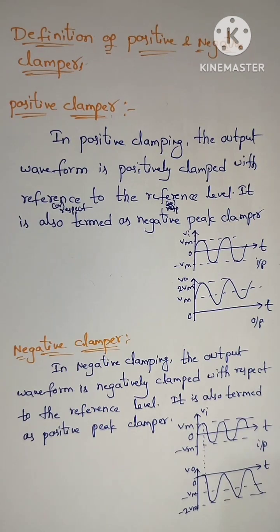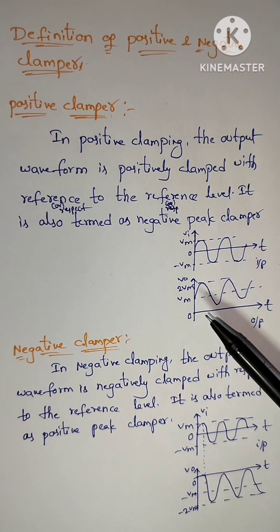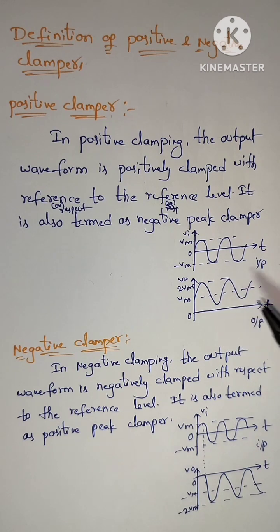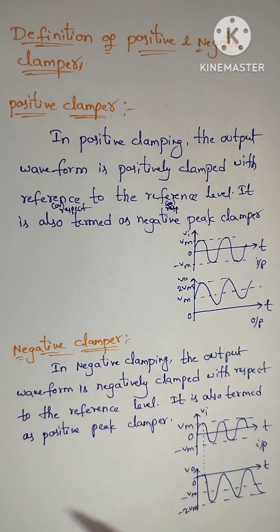In positive clamping, the output waveform is positively clamped with respect to the reference level. It is also termed as negative peak clamper. This is the input signal and this is the output of the positive clamper.